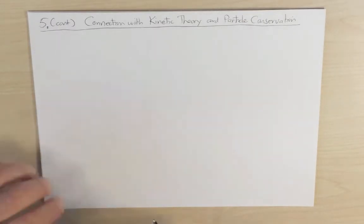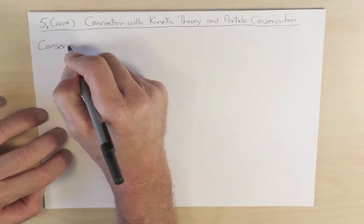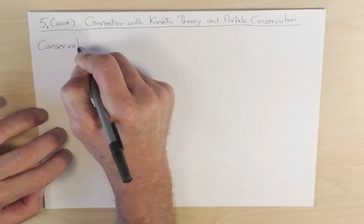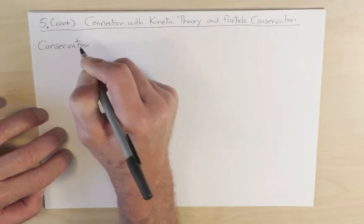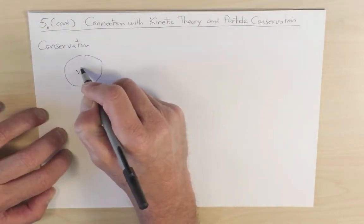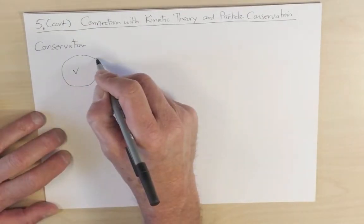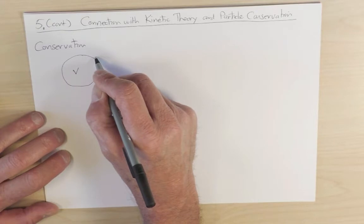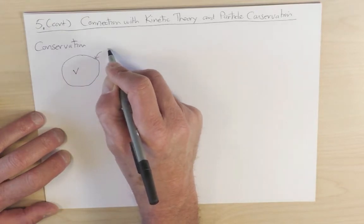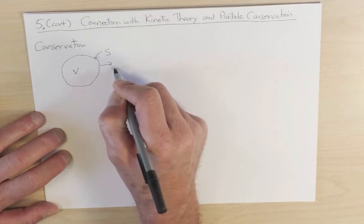Let's first start with a statement of particle conservation. Imagine that we have a gas of particles, and let's ask how in a particular volume v the number of particles changes. So we have a volume v, I'm going to define a surface associated with this volume, the surface area, and one normally defines an outward normal surface element ds vector. So how does the number of particles change inside of this volume? So dn by dt.